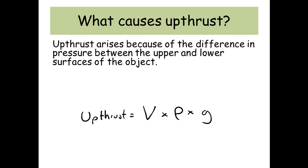What causes up thrust? Up thrust arises because of the difference in pressure between the upper and lower surfaces of the object. So here's the equation.